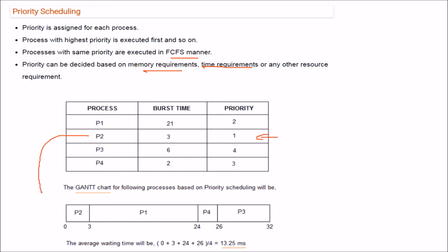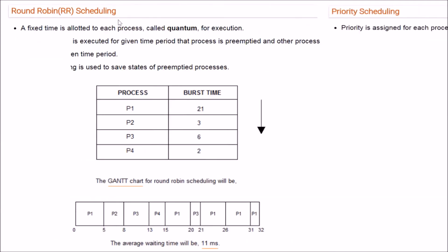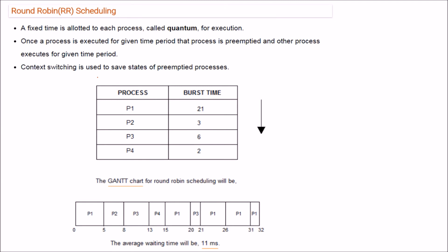In our example, P2 has the highest priority (lowest number) so it runs first, then P1, then P4, then P3. The waiting times are 0, 3, 24, and 26. Adding them and dividing by 4 gives an average waiting time of 13.25 milliseconds.